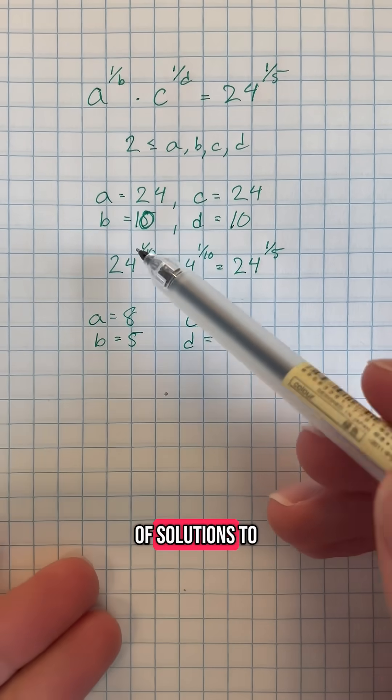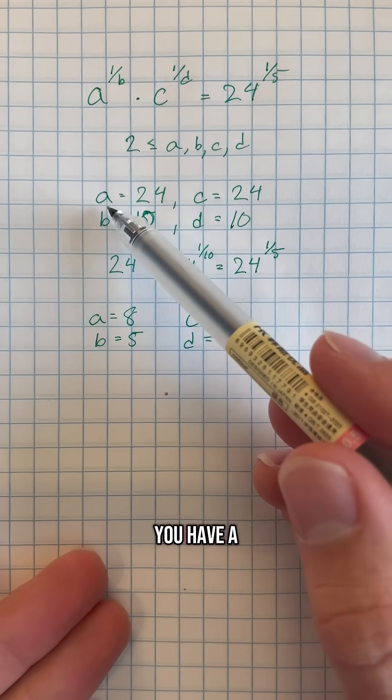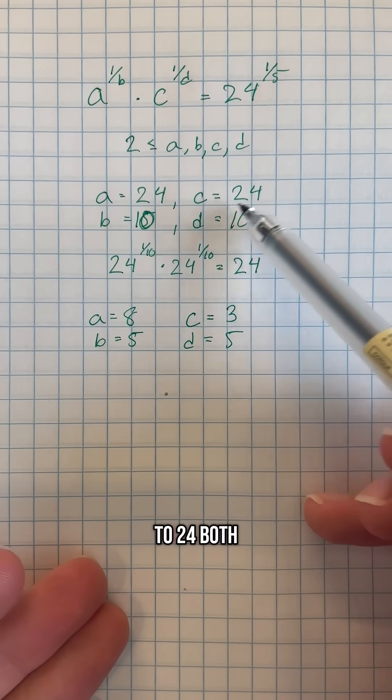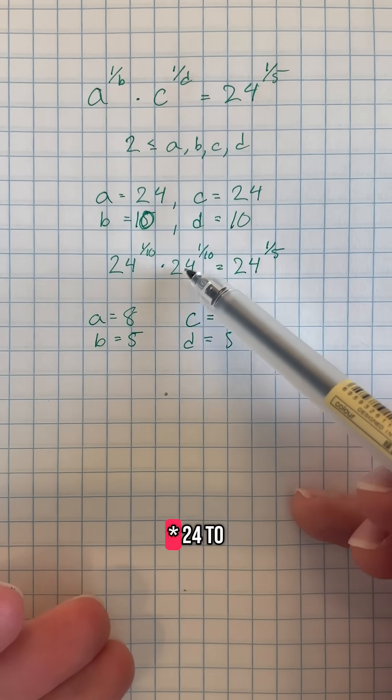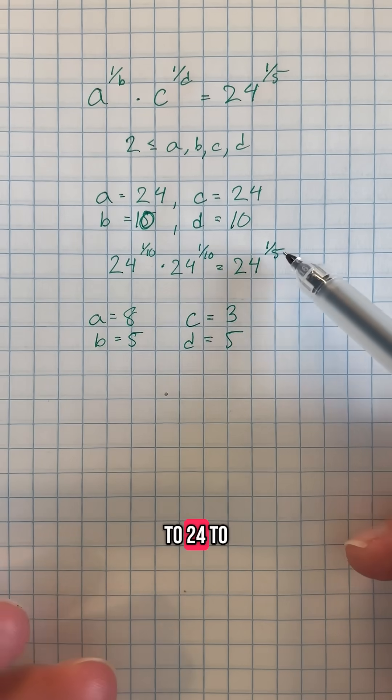Now it turns out that there are a lot of solutions to this equation. For example, if you have a is equal to 24, c is equal to 24, and both b and d equal to 10, you have 24 to the 1 over 10 times 24 to the 1 over 10 is equal to 24 to the 1 over 5, which is true.